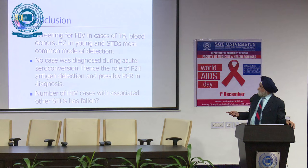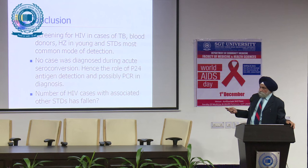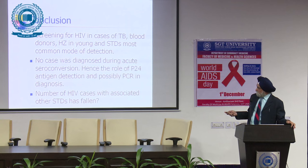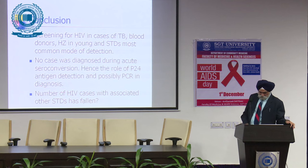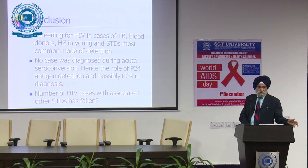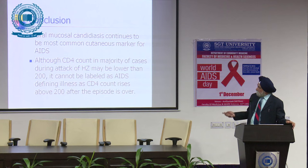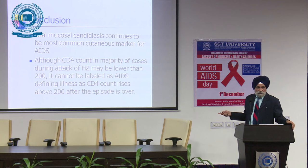The most common presentation of HIV in this study was detection through tuberculosis workup or among blood donors, followed by herpes zoster and asymptomatic cases. No cases were diagnosed during acute seroconversion by antibody testing, but P24 antigen or PCR could pick up HIV positivity in that window. Oral candidiasis continues to be the most common cutaneous marker of AIDS. CD4 count during active herpes zoster was less than 200 but this cannot be taken as an AIDS-defining criterion.